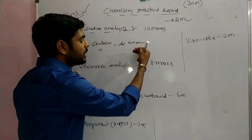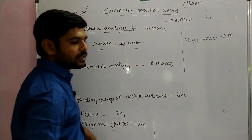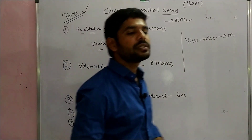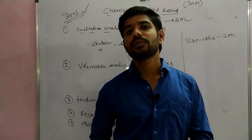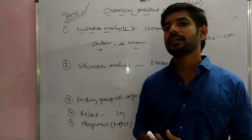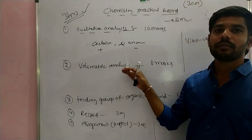After calculating the cation and anion, the next step is volumetric analysis. This is the complete analysis of volumetric analysis — acid is the base. If you want to make a color change, you can calculate it and complete this experiment.